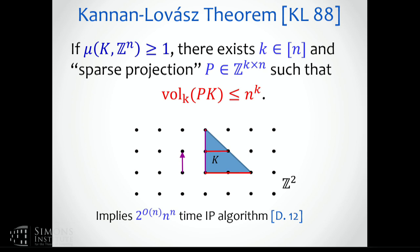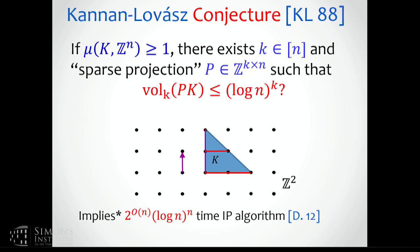Where could we hope to get an improvement? This is where the conjecture comes in: this estimate is very far from being tight. Instead of enumerating like n problems per dimension, you should be able to find a sparse projection where the projection tells you that you only need to enumerate log n problems per dimension. Assuming this conjecture, there is hope you can get an algorithm with roughly this complexity — the only star is that you have to know how to compute the projection.